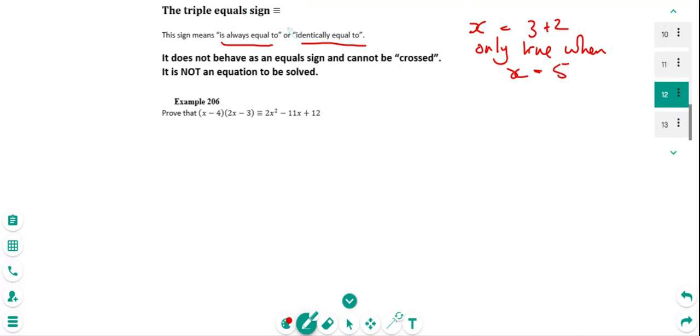it's only true for one specific value of X. So only true when X equals 5. So that's less than what this is saying. If I said X is identically equal to, or it's triple equals sign, so if I say 2X is identically equal to X plus X, we can see that that's something more than the top line there.